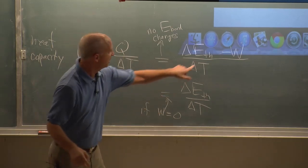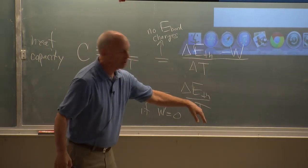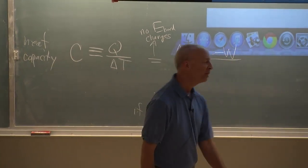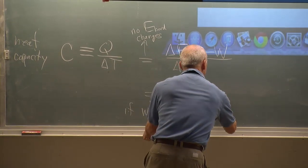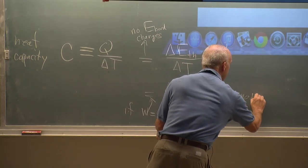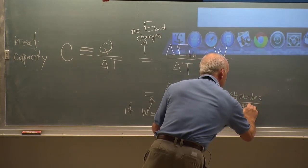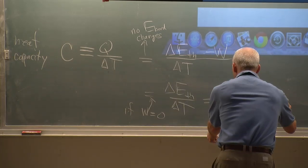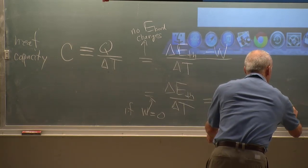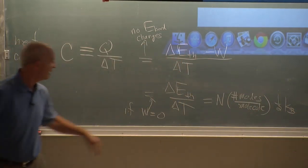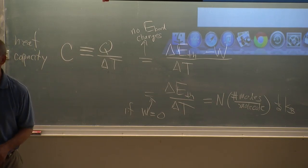So changes in thermal energy depend on changes in temperature, and that means if no work is done, I'm going to make that the zero, call this delta E thermal over delta T. Write in that delta E thermal. There's a delta T, but I divided the delta T out. So that's gone.